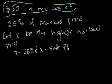And I'm assuming that I'm in a state without sales tax. Whatever the sale price is, is what I have to pay, cash. So x minus 25% of x equals the sale price.